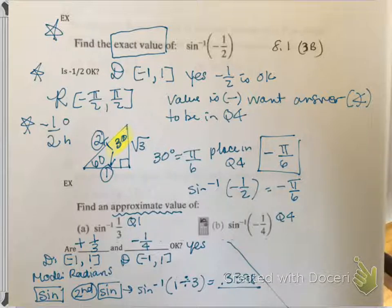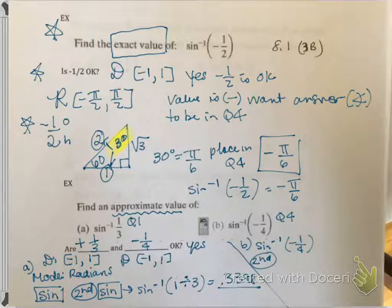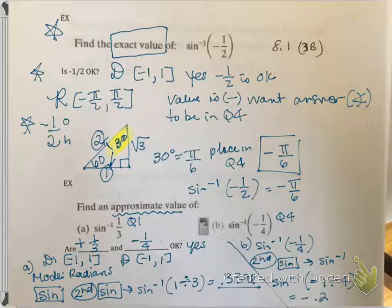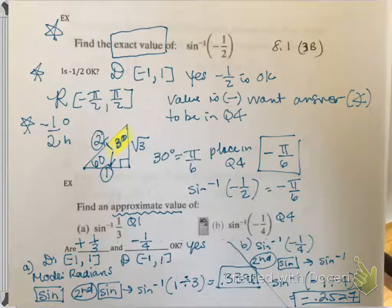For part B, I'm looking at inverse sine of negative one-fourth. Your mode should already be in radians. Once again, hit the second button if you have TI-83 or TI-84 and click on the sine button — that gives you inverse sine. Then touch the negative button, which is right underneath the number 3. Do not use the minus button — it will give you an error. So you do 1 divided by 4 and plug that in, and you get negative 0.2527. That's how you do these on the calculator. I'm going to stop the video and go ahead and do part 2 for you.